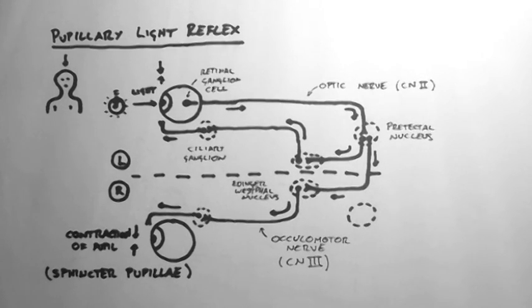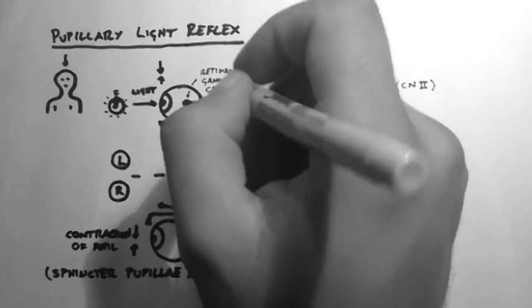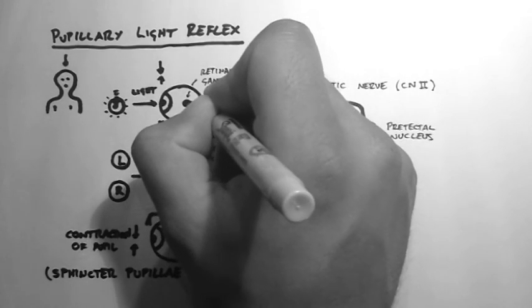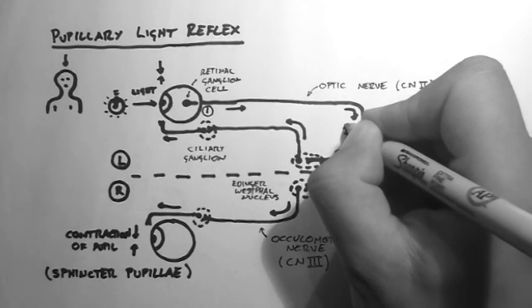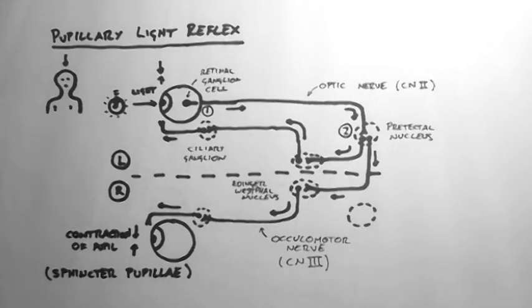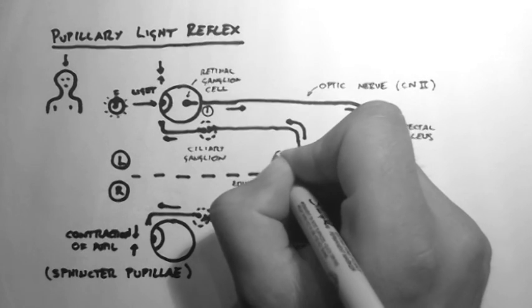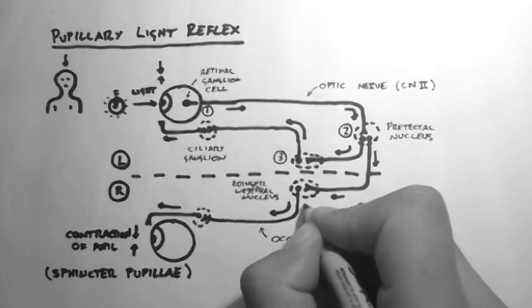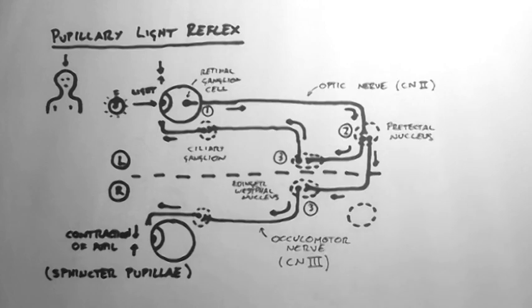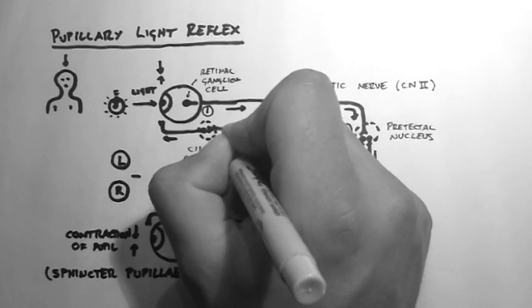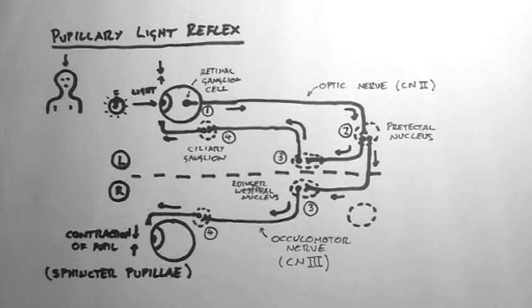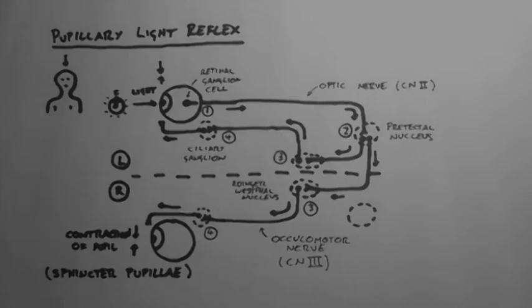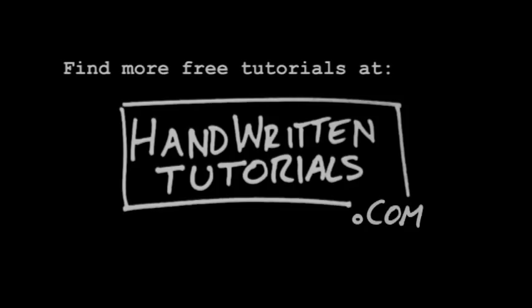Now note how many neurons there are. There's one here. The second here. The third here and here. And the fourth here and here. So this is a four-neuron reflex. And that's the pupillary light reflex. For more free tutorials and the PDF for this tutorial, visit www.HandwrittenTutorials.com.